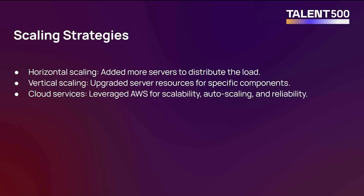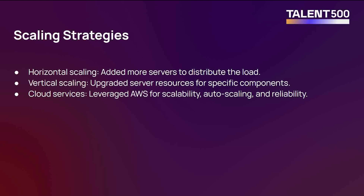There are scaling strategies to consider when scaling an e-commerce platform. First, horizontal scaling: adding more servers to distribute the load. Instead of upgrading one server, you add two more similar servers to handle the incoming load. Second, vertical scaling: adding more power to a single server — upgrading server resources for specific components. Third, cloud services: leveraging AWS for scalability, auto-scaling, and reliability.